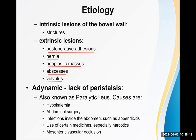The second type of intestinal obstruction is adynamic, also known as paralytic ileus, which means lack of peristalsis. An important cause is hypokalemia — decreased potassium in the blood can paralyze the bowel.